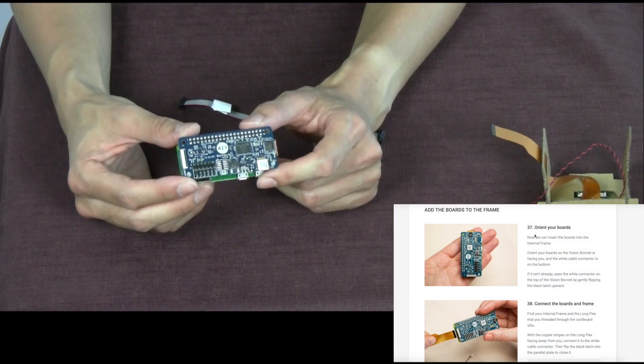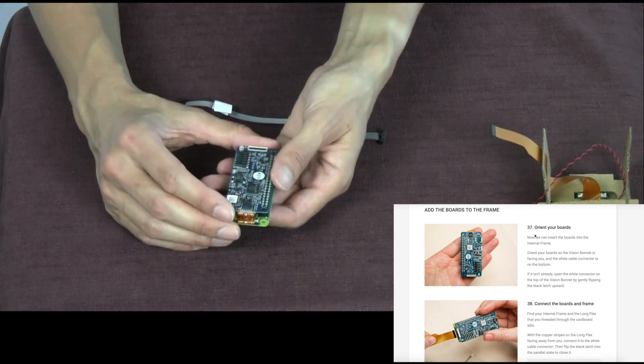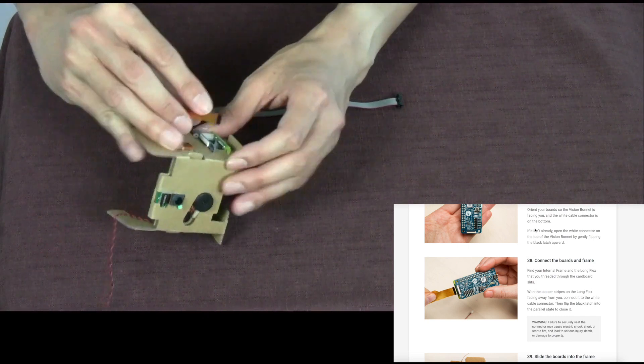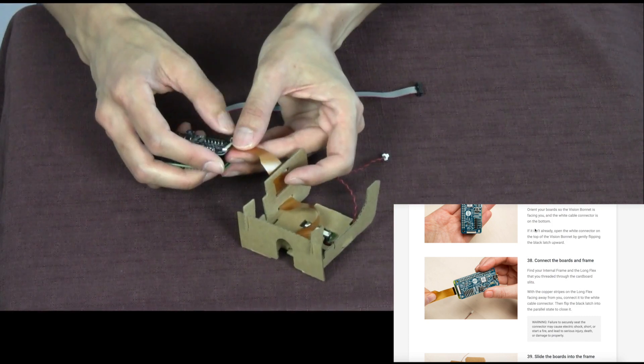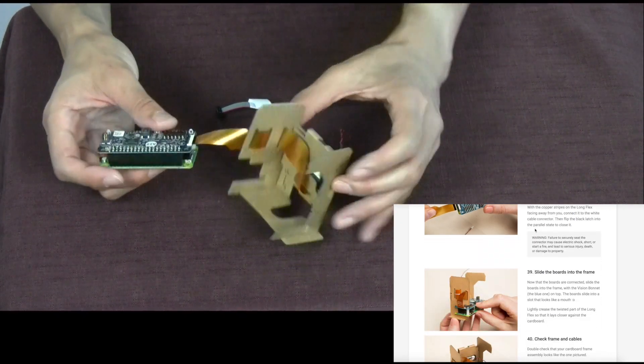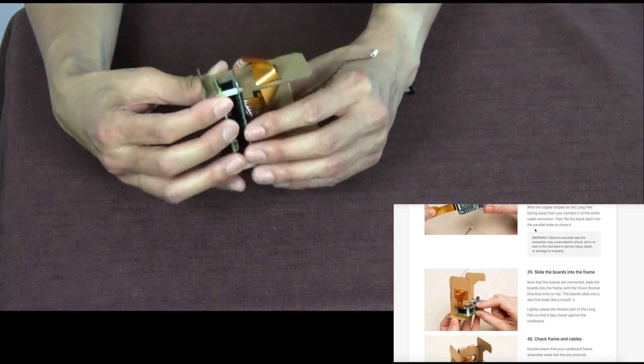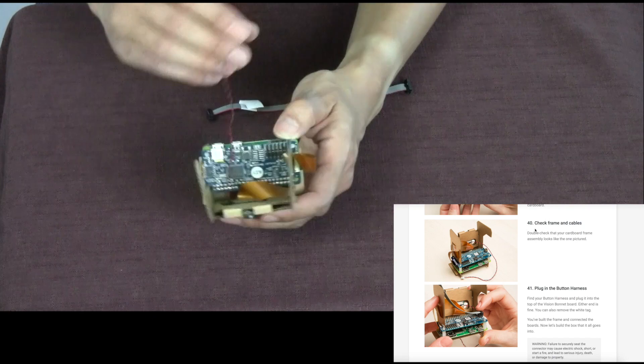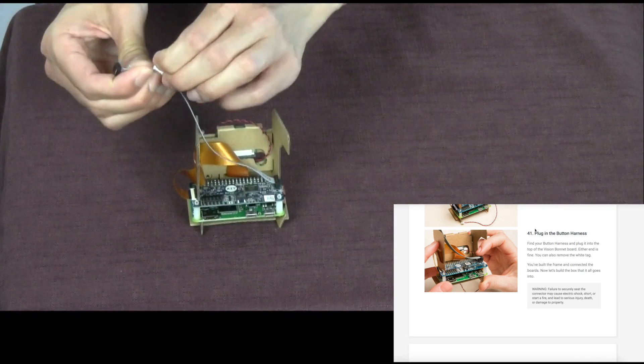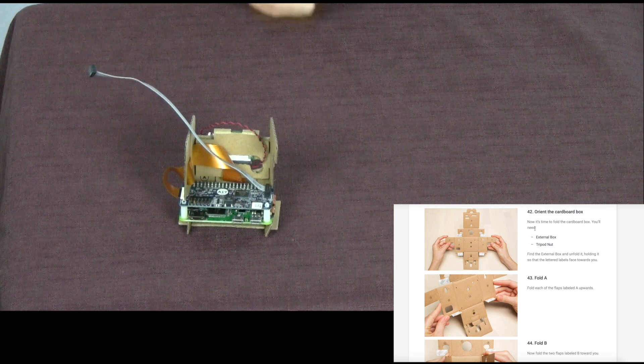Now we're up to the section where I'm adding boards to the frame. Orient my board and then connect the boards and the frame. With the copper stretch on the long flex facing away from me, connect it to the white cable connector. And then flip the black latch and parallel state to close it. Now I'm going to slide the board into the frame. I can see vision bonnet right here. Check frame and cables. Now we're ready to plug in the button harness. Plug that in. You can also remove the white tag. That was step 41. Now we're ready to move on to step 42. Orient the box.